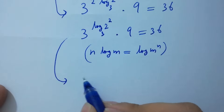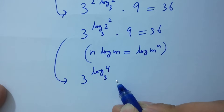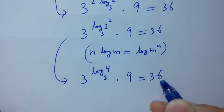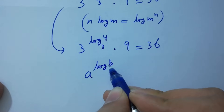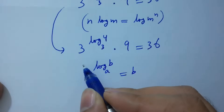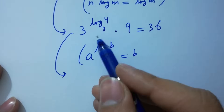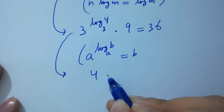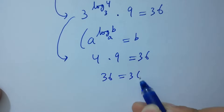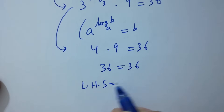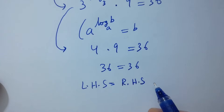We have 3 to the power (log base 3 of 4) times 9 equals 36. Using a to the power (log base a of b) equals b, we get 3 to the power (log base 3 of 4) equals 4. So 4 times 9 equals 36. Left-hand side equals right-hand side, which confirms the value satisfies the equation.